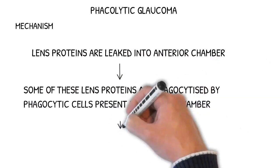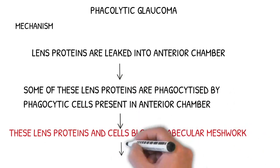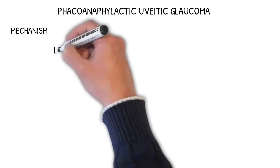These lens proteins and cells block the trabecular meshwork, in turn leading to glaucoma.